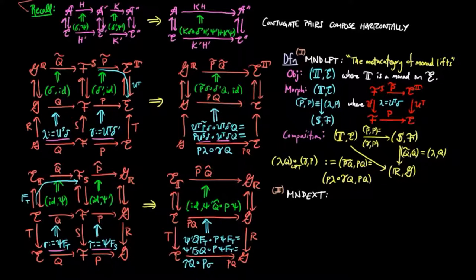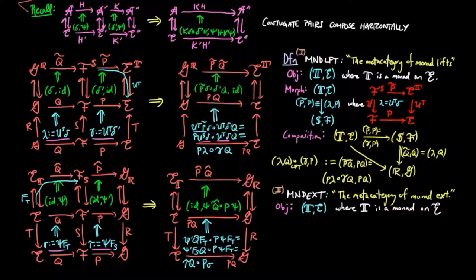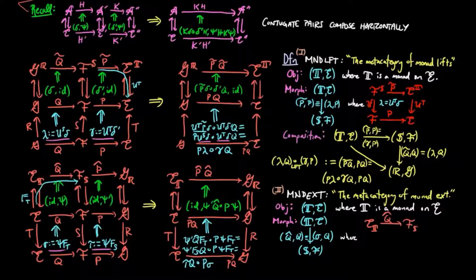We then define the meta-category of monad extensions, which consists of a monad t and the category e it is defined on as objects, and morphisms as pairs q-hat-q, which is equivalent to sigma-q, where q-hat is the Kleisli extension of q along f-t, f-s, and sigma is the corresponding natural transformation defined as psi-ft, where psi is the right mate of the identity as described on the left.